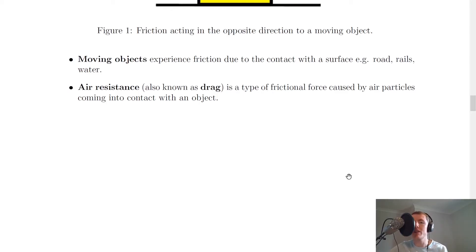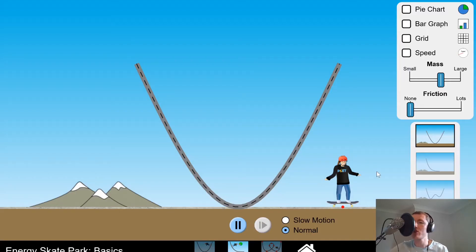I'll now just show you a quick simulation to show you the effect that a frictional force will have on an object. So let's assume we have a curved track and a skater on the curved track, but we're going to assume there's no friction between the track and the wheels of the skateboard to begin with. And there's also going to be no air resistance. So we're assuming no friction and no air resistance.